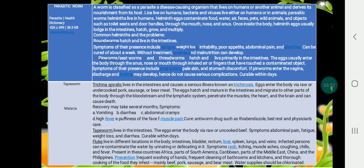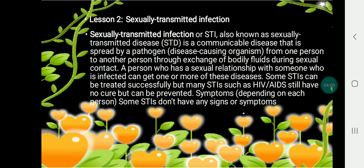Next are parasitic worms, such as tapeworm and malaria-related parasites. Sexually transmitted infections, or STIs — also known as sexually transmitted diseases or STDs — are communicable diseases spread by pathogens from one person to another through exchange of body fluids during sexual contact. A person who has sexual relations with someone who is infected can get one or more of these diseases.